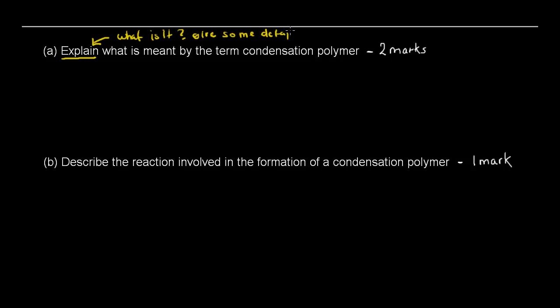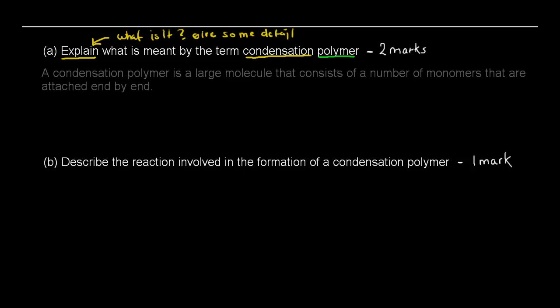So you need to be able to explain both what a polymer is and what a condensation polymer is. If you can do that in your answer, you should get two marks. First, I wrote a condensation polymer is a large molecule that consists of a number of monomers that are attached end by end. So first we've described what a polymer is. I used a few scientific words such as large molecule. I made sure to use that word monomers which is very important.